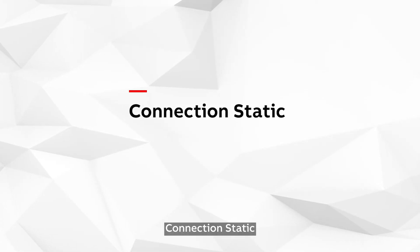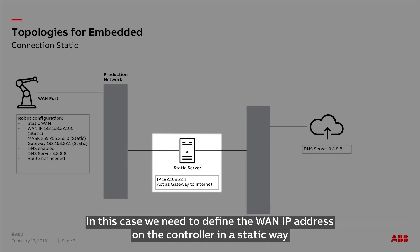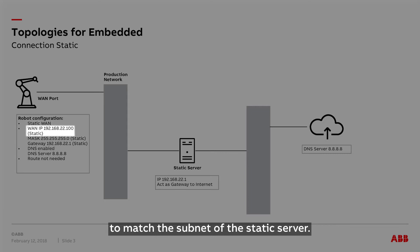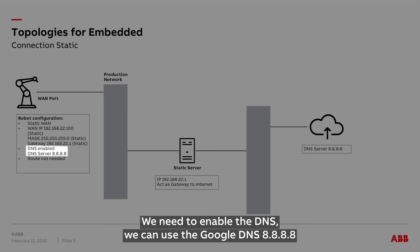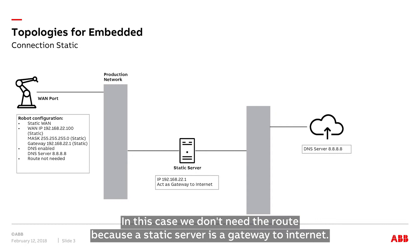Connection Static. Here we have a topology with a static server on the production network. We need to define the One IP address on the controller in a static way to match the subnet of the static server. It uses the static server as a gateway. We need to enable the DNS — we can use the Google DNS 8.8.8.8 or another public DNS. In this case, we don't need the route because the static server is a gateway to internet.